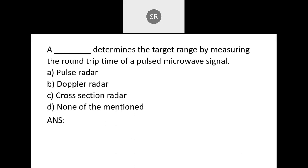Next: It determines the target range by measuring the round trip time of a pulsed micro signal. This is about: A — pulse radar, B — polar radar, C — cross section radar, or D — target range. Since it uses round trip time of a pulse, the answer is defined by the question itself. The correct answer is A — pulse radar.